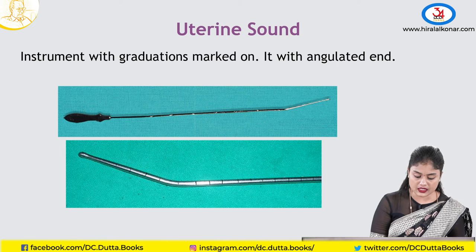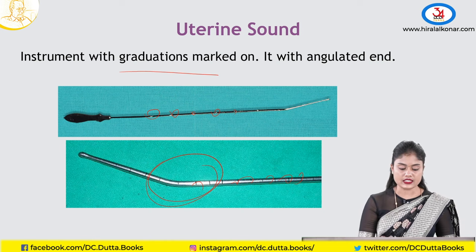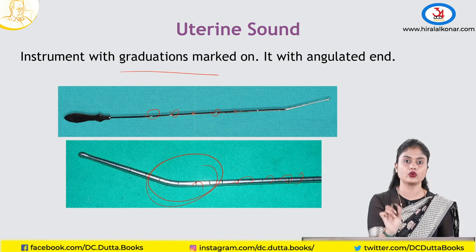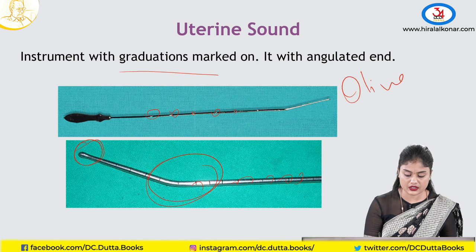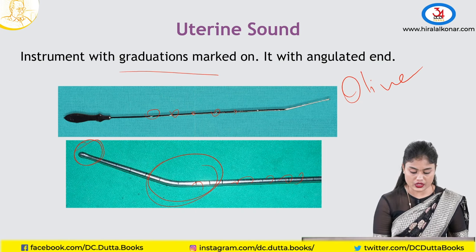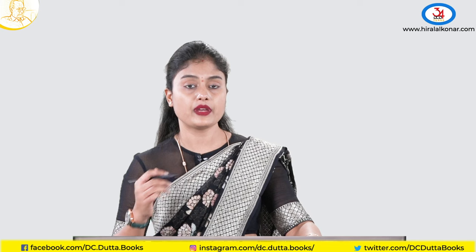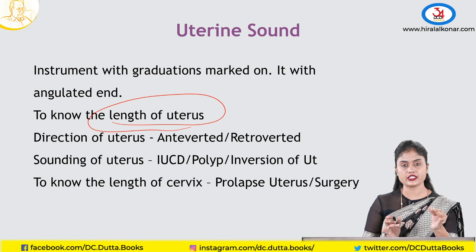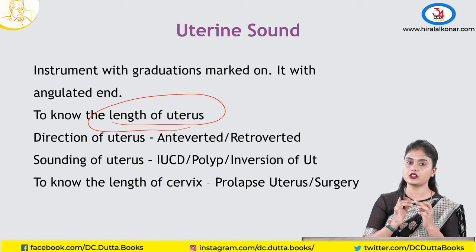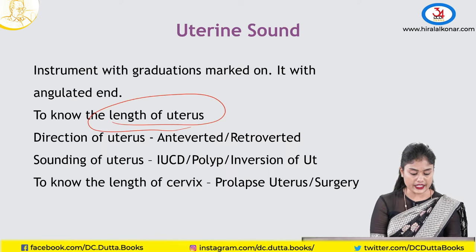Coming to the uterine sound. You can see graduation markings on the instrument with an angulated tip — it is called an olive-tipped uterine sound. It is the thinnest instrument that can go inside the uterine cavity without causing harm. It is used to measure the cervical and uterine length — from the external os to the internal os is the cervical length, and from internal os to the fundus is the uterine length. The direction of the uterus can also be known by the angle of the sound.